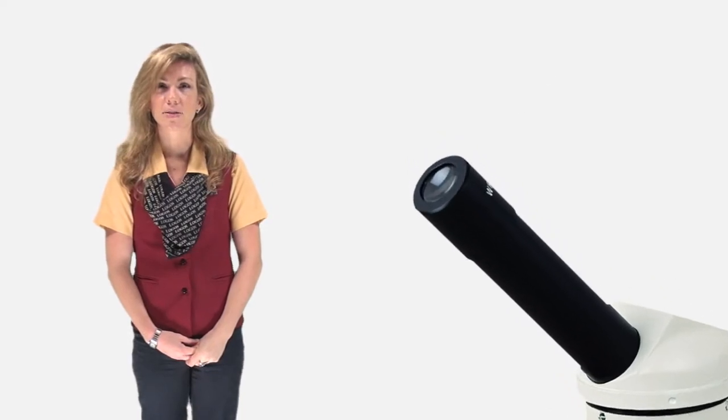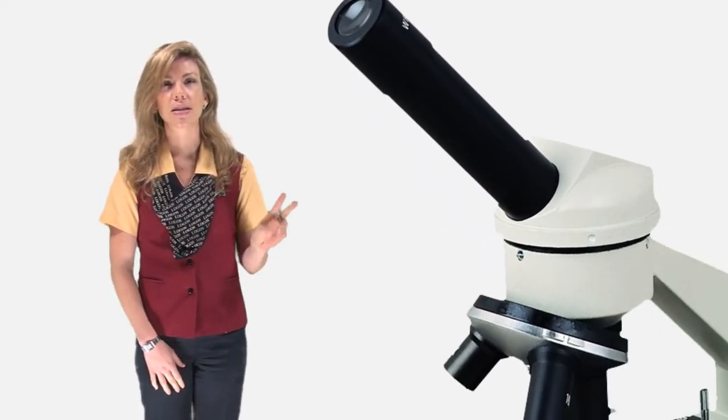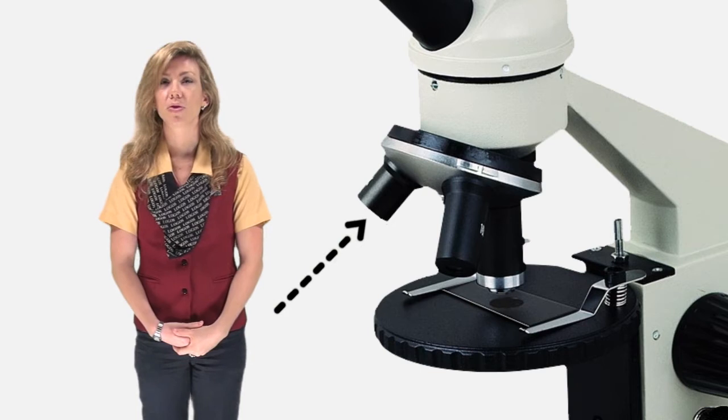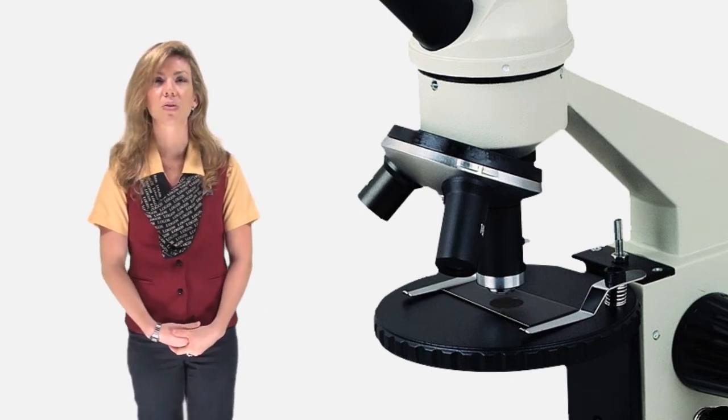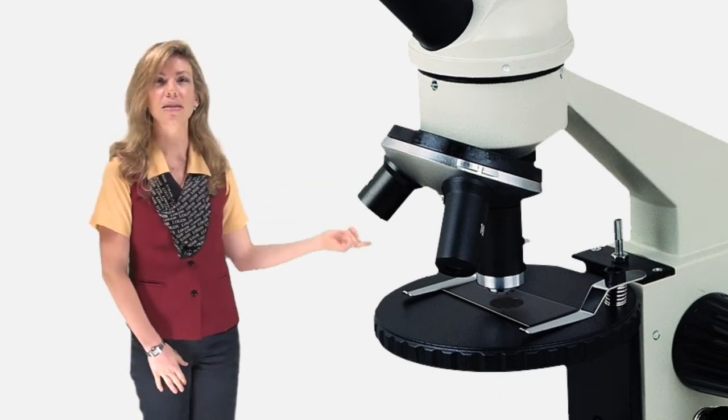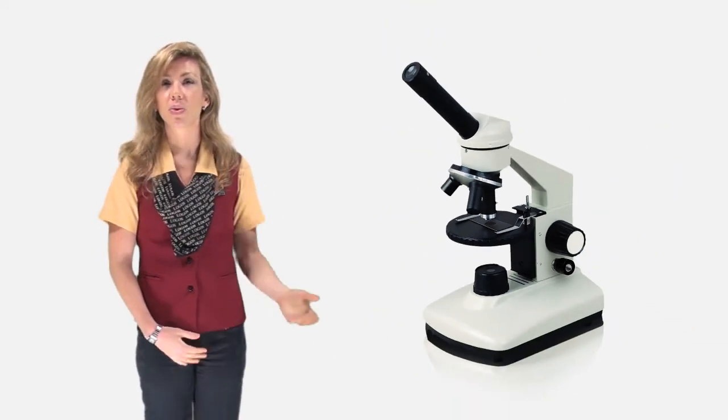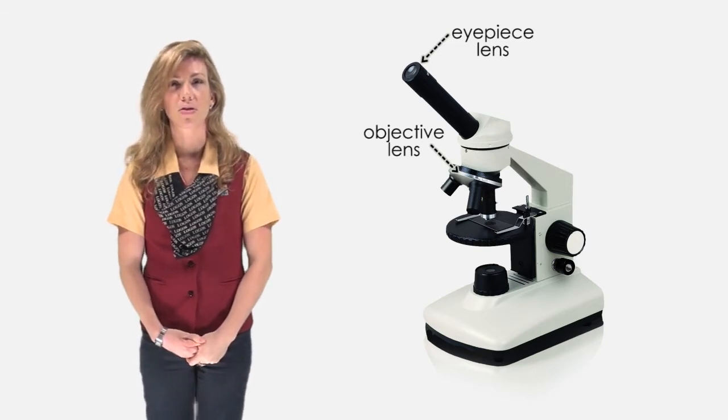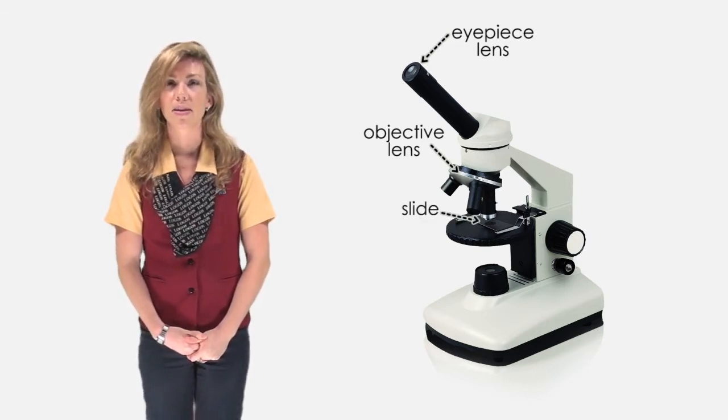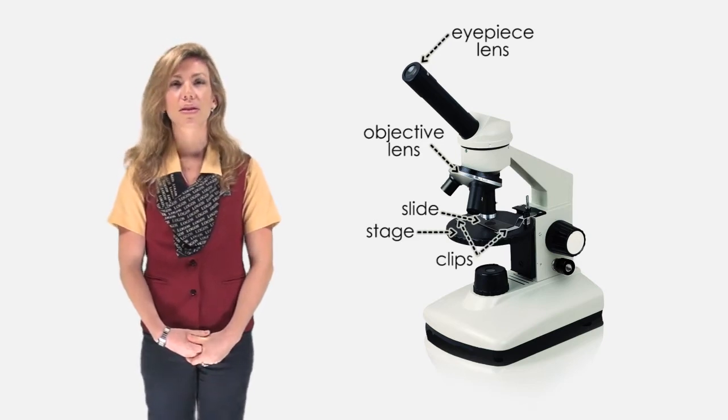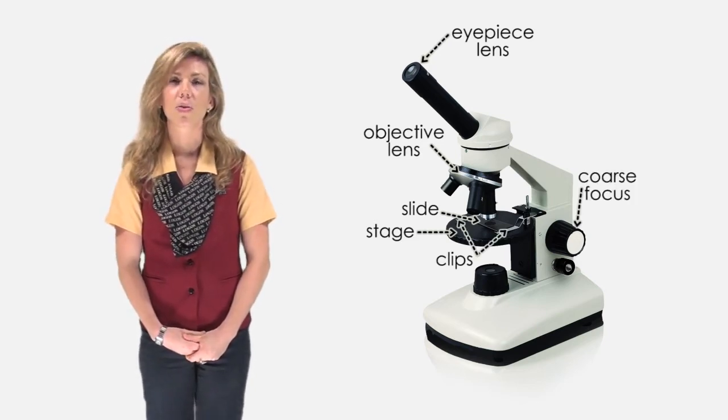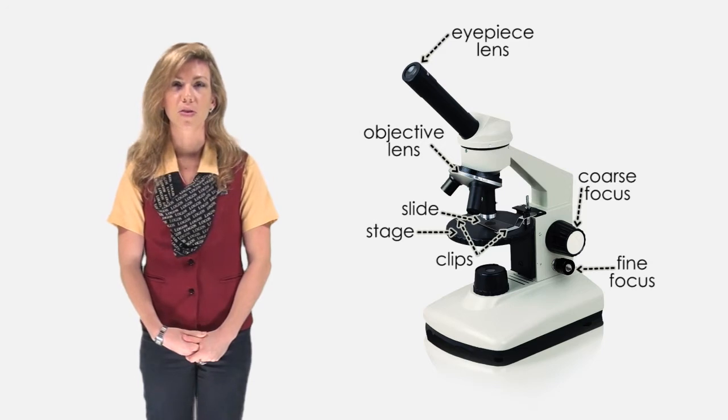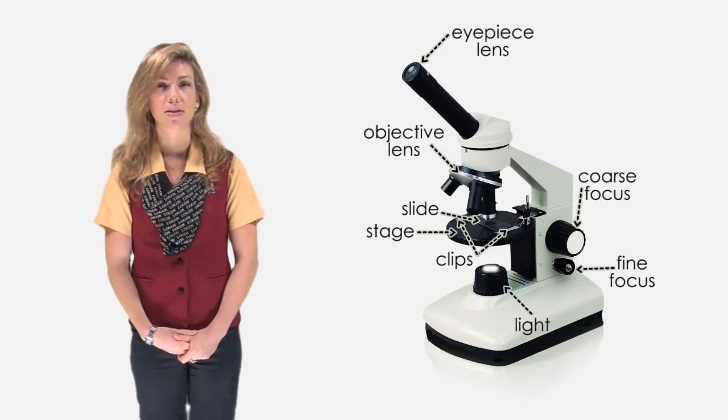One lens is fixed in the eyepiece. The second lens is chosen from a group of two or three lenses on the revolving nosepiece or the objective lens seen in the picture. Here you can see the eyepiece lens, the objective lens with three magnifications to choose from, the slide, the stage, the clips to hold the slide to the stage, the coarse focus, the fine focus, and the light which illuminates the object.